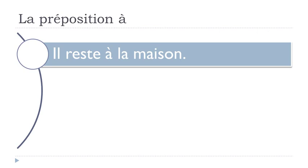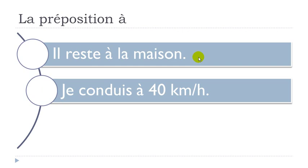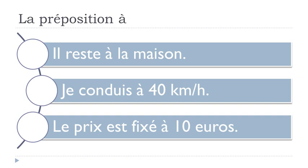We'll start with 'at'. A few examples: the first one, if you want to translate it with 'at', would be 'Il reste à la maison'. Rester is to stay, so 'Il reste à la maison' means 'he stays at home'. Second example: 'conduire' — to drive. When you want to introduce the speed, for instance 40 km/h, then you would use À: 'Je conduis à 40 km/heure'.